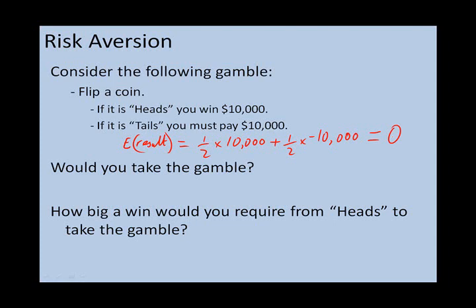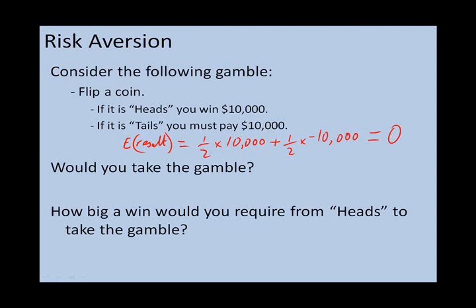Most people will reject this gamble. But how big a win would you require from heads in order to take the gamble? Do you require $11,000? $15,000? $20,000? Maybe you require $40,000. Or if you're really risk averse, maybe you require $80,000, or even more from heads. If you took the original gamble, we would say that you are risk neutral. If you required a payoff of less than $10,000, you're risk loving. But if, as most people do, you required a payoff of more than $10,000, you're risk averse.